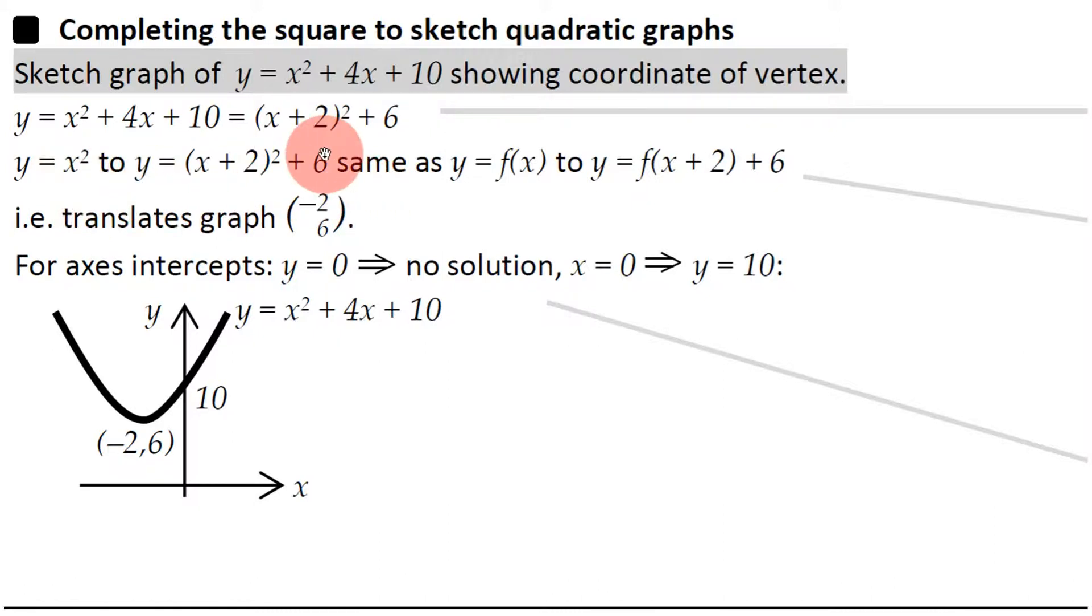So let's get back to what I was talking about, which is this graph, which we've transformed to y equals (x+2)² plus 6. If you compare it to the y equals x squared graph, you can see that the x has been replaced with an x plus 2.